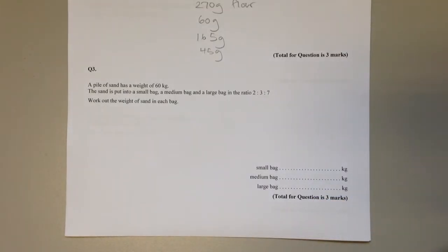Question 3: A pile of sand weighs 60 kilograms. It's put into small, medium, and large bags in the ratio 2 to 3 to 7. We have to work out the weight of sand in each bag.